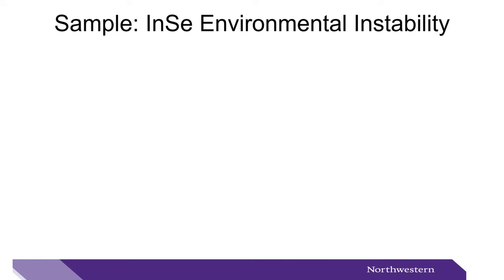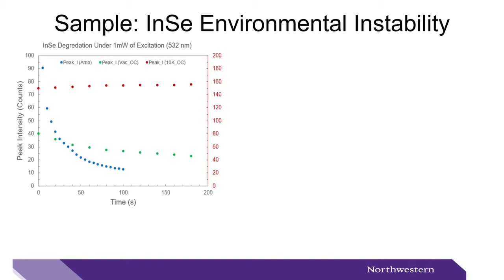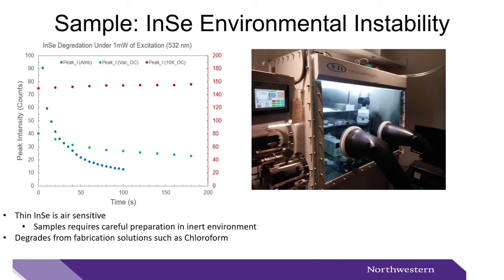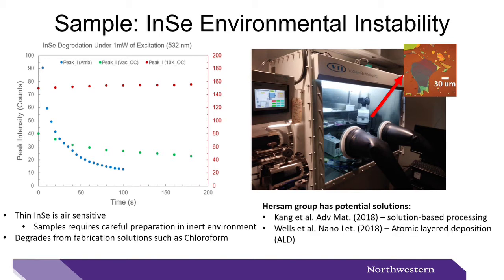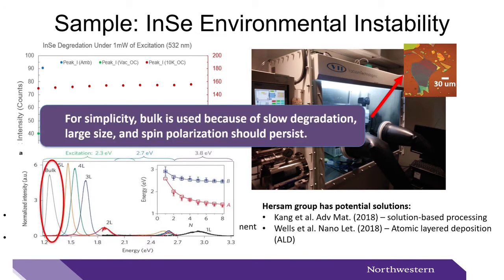Another property of indium selenide that must be considered is its environmental instability. This can be tracked with photoluminescence over time. Here is a plot showing the degradation of thin indium selenide under one milliwatt of green light. The blue curve is the degradation of the sample in ambient, green in vacuum, and red at 10 Kelvin. This highlights indium selenide's air sensitivity. Therefore, preparation of thin layers must be in an inert environment like a nitrogen glove box. However, indium selenide also degrades in solutions like chloroform, which is used to fabricate devices. There has been work done by groups like the Hurston Group at Northwestern presenting potential solutions to this problem, but for simplicity, bulk is used in this work because of its slow degradation, its large size, and that spin polarization should still persist.